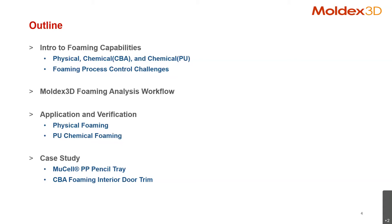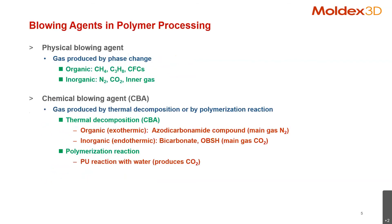At the end, we will have two case studies. The first one would be a polypropylene pencil tray made by MuCell. And another one will be an interior door trim made by chemical foam injection molding.